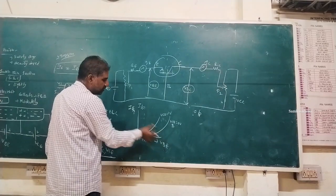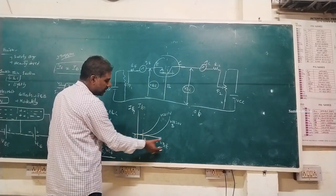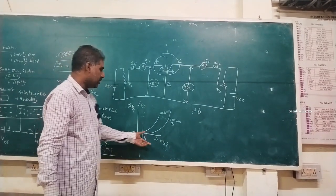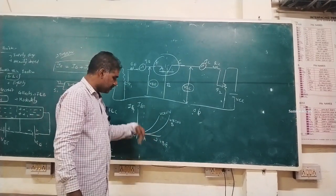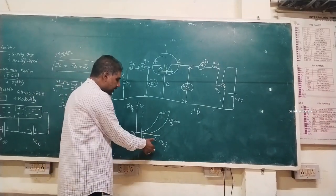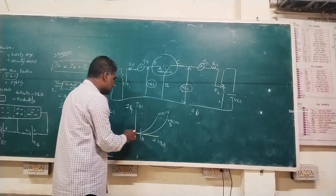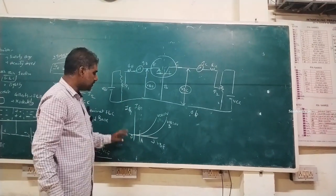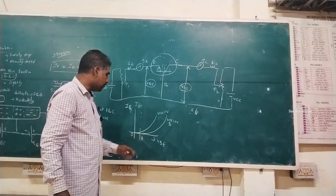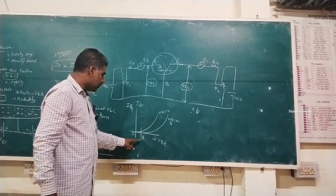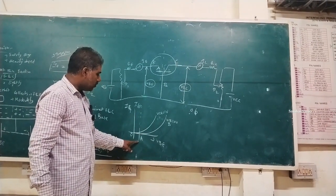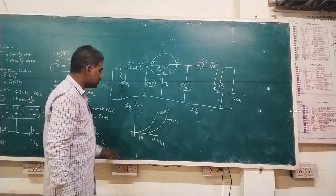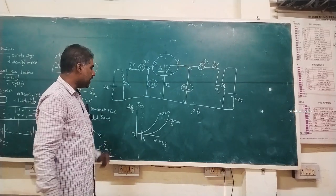Taking voltage along the x-axis and current along the y-axis, the graph shows that from 0 to A it does not obey Ohm's law, and from A to B it obeys Ohm's law. This is the input characteristic.